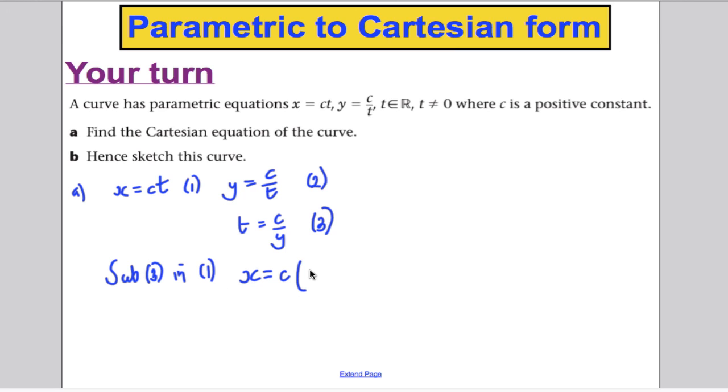Where you have x is ct, which would be c multiplied by c over y. So therefore, x would equal c squared over y. And you could just multiply both sides by y. You could multiply both sides by y and divide both sides by the x to make y the subject. y would therefore be c squared over x. And that's your Cartesian form.